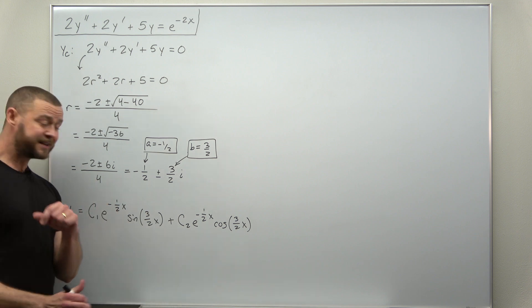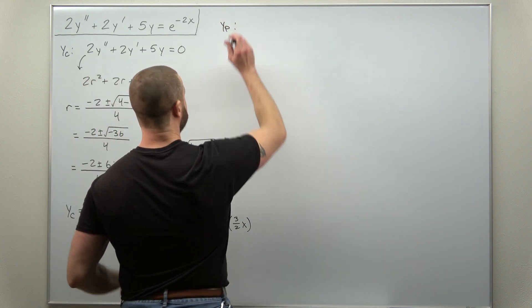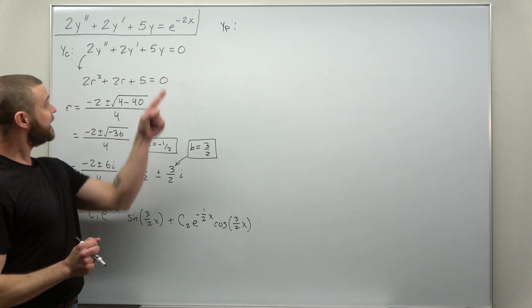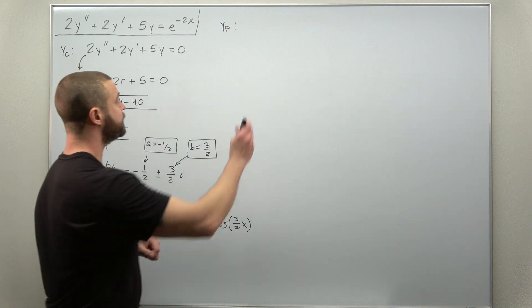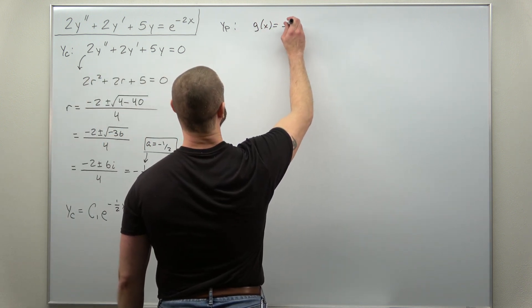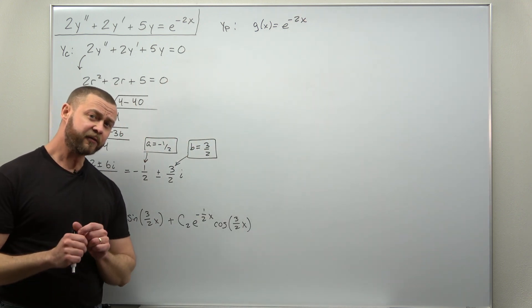Now we can move on to finding the particular solution. And to start, we always look at the non-zero right hand side, what we call g of x. Here, that is e to the negative 2x. Now be careful.